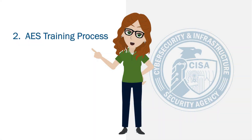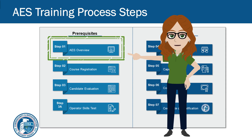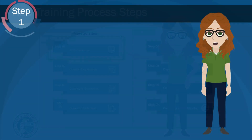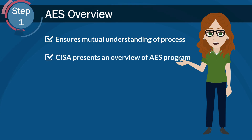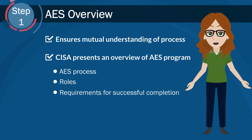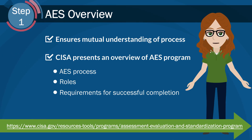Next, let's review the training process. The AES training process consists of seven steps divided into two areas: prerequisites and courses. Let's take a deeper dive into each step. The AES overview is the first prerequisite. AES requires all applicants to review the AES program overview as their orientation to the program. Visit the AES webpage or the CISA YouTube channel to view the program overview.